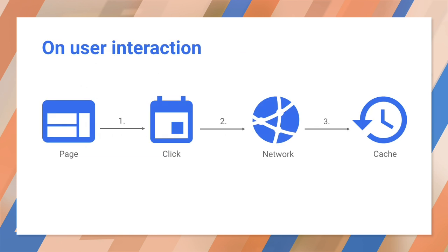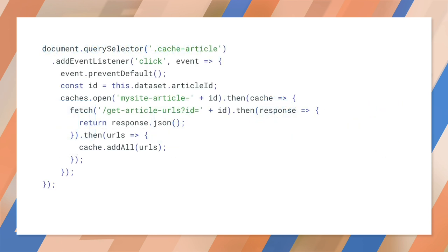You might want to enable your users to manually select content they want to make available offline — for example, a video, an article, or a particular gallery of images. Give the user a 'read later' or 'save for offline' button, and when it's clicked, fetch what you need from the network and pop it in the cache. The Cache API is available from JavaScript in the page as well as from Service Workers, meaning you don't need to involve the Service Worker to add things to the cache.